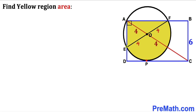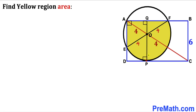Therefore EO is the radius of this circle, so it's going to be 4 units. Likewise, OF is the radius as well, so this is also 4 units.